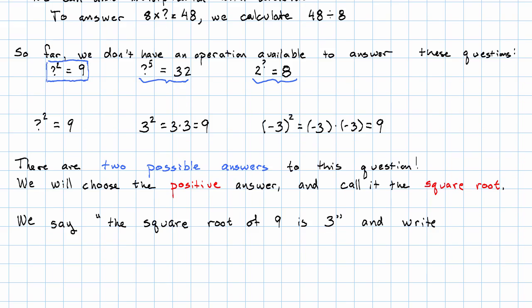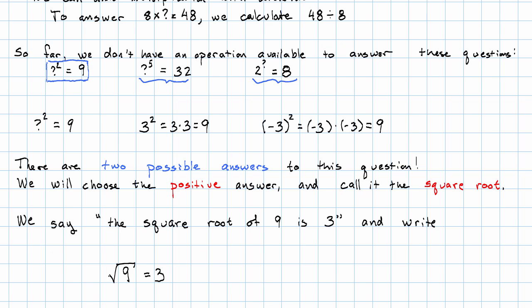And what we write in symbols is, this symbol we have a check mark and then a line over whatever we're taking the square root of. The square root of 9 equals 3. This symbol is called a radical. And it's important that we have this check mark at the beginning and that the line extend all the way over whatever's inside the radical.